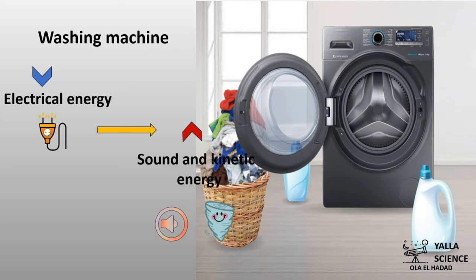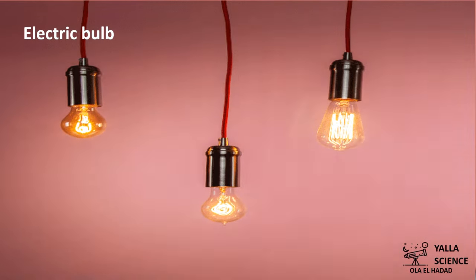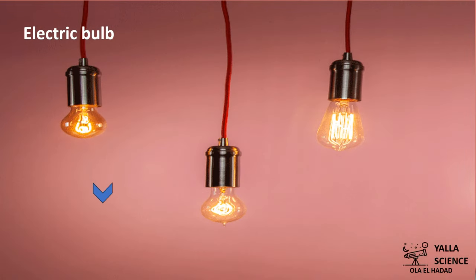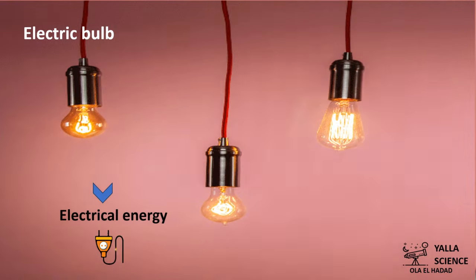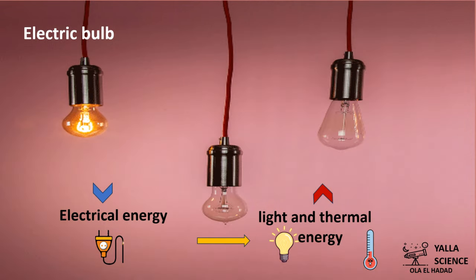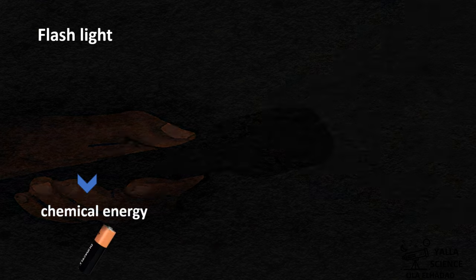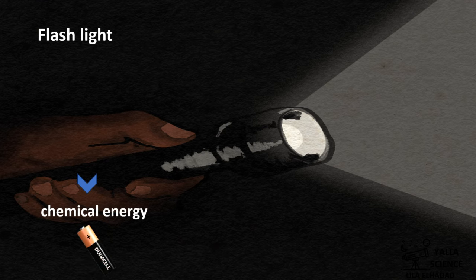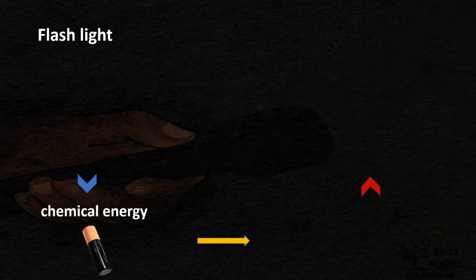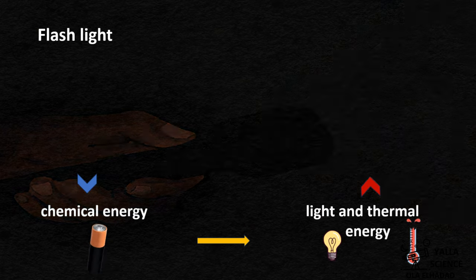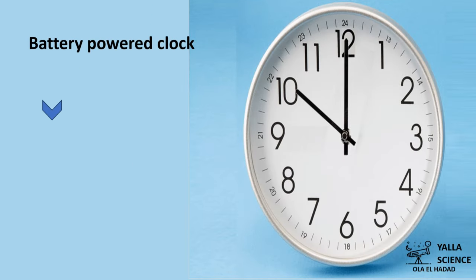Another example: the electric bulb. Its function is lighting. The input energy that gets inside the electric bulb is electrical energy, and the output energy that comes out is light energy and thermal energy. Another device used for lighting is the flashlight. It uses batteries, so the input energy of the flashlight is chemical energy, and the output energy is light and thermal energy.